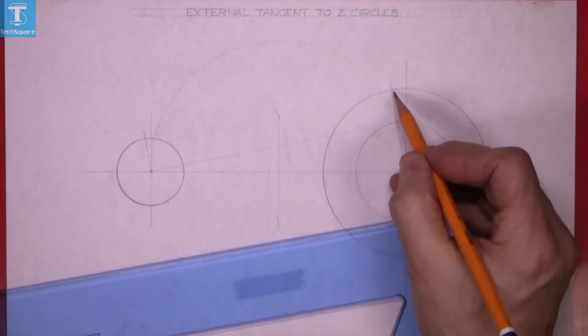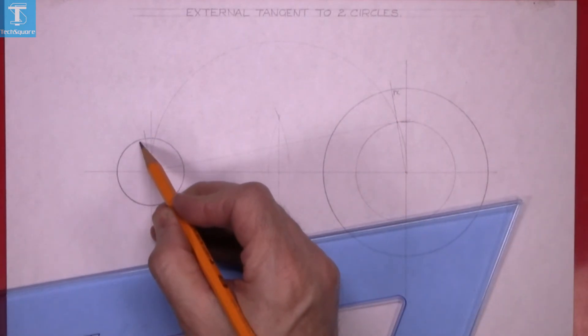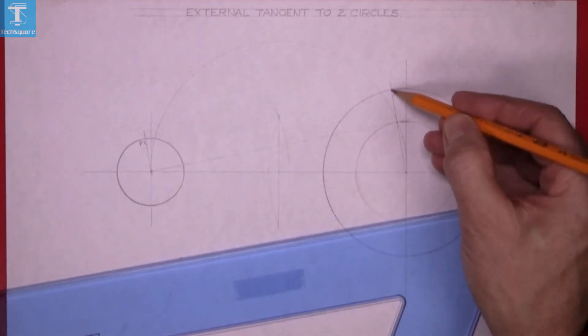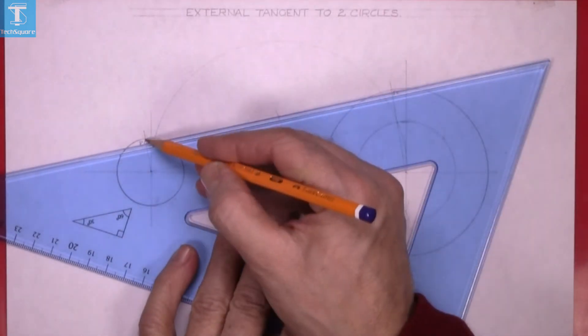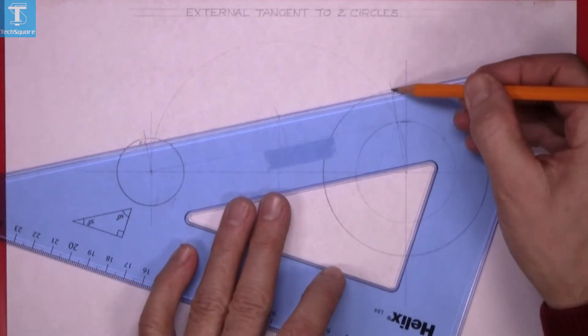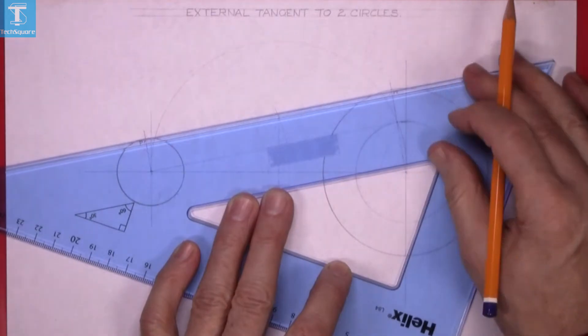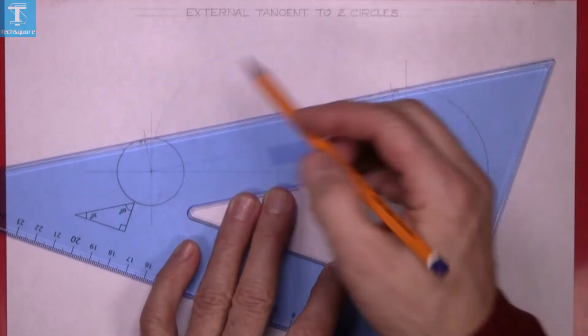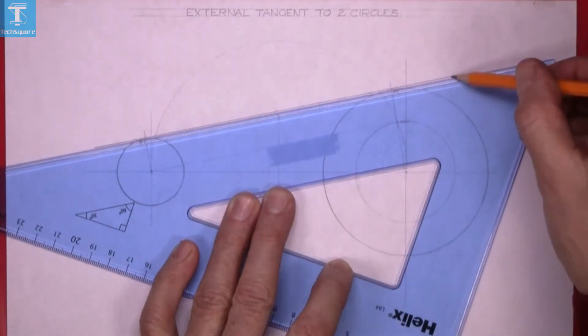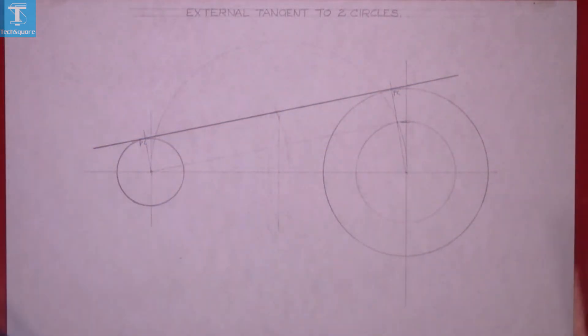Now all I have to do is join those two points, and that gets me the tangent to the two circles - an external tangent to the two circles.